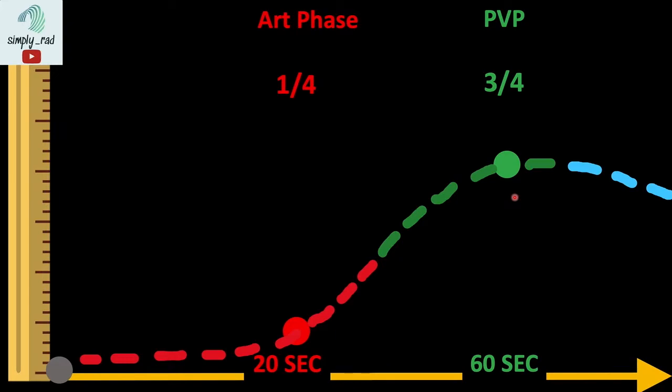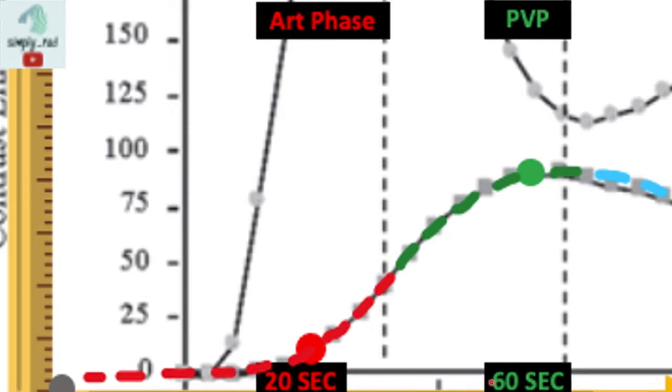This is the graph of hepatic enhancement after injection of contrast. Again, notice the peak enhancement occurring during the portal venous phase. This is the scan we take at about 60 seconds after injection of contrast. This is the same graph in the textbooks explaining the same concept.